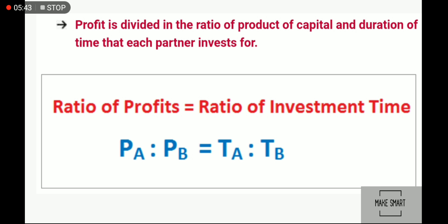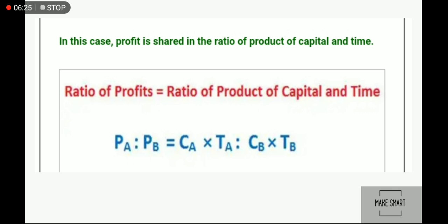Next, profit is divided in the ratio of the product of capital and duration of time that each partner invests. Sometimes both partners invest different amounts and for different time periods — one invests an amount for twelve months and another invests a different amount for six months. In this case, the ratio of profit of A to B equals the ratio of capital times time for A, to capital times time for B.